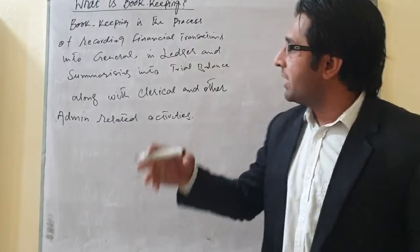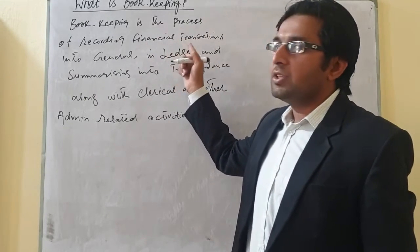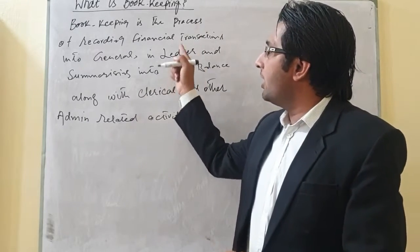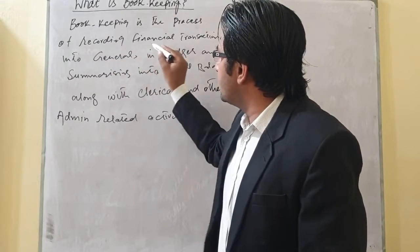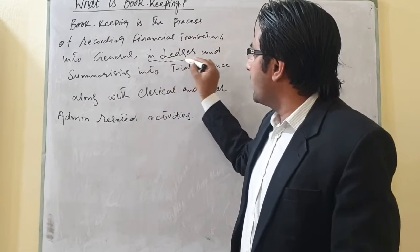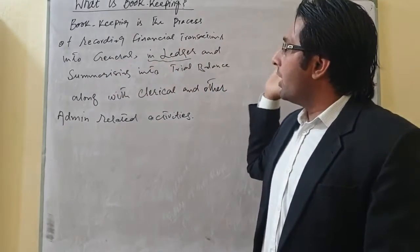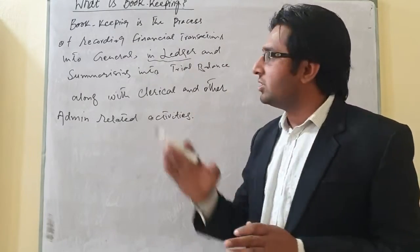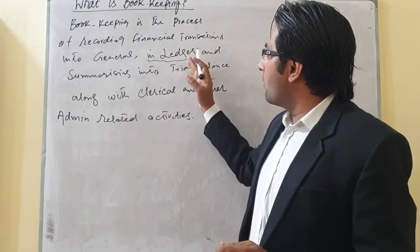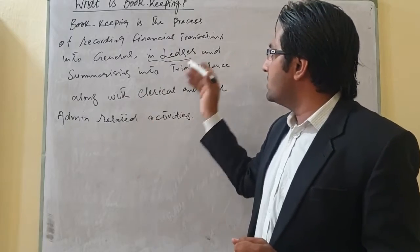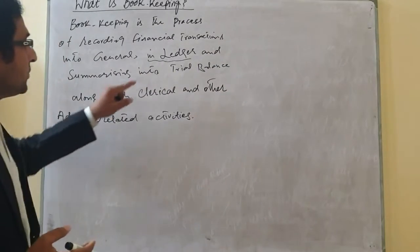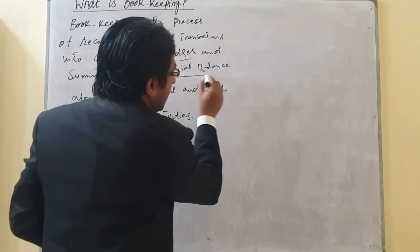As we know in accounting, the first step is to record the transactions in general journal. Whenever there is a transaction in a business, that transaction is first recorded in the general journal. After recording transactions in the general journal, we forward those transactions into the ledger. We record the transactions in journal according to the rules of debit and credit, then forward those journal entries into their specific accounts.